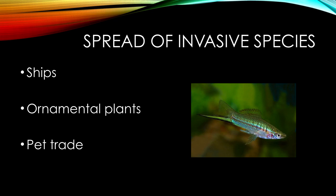Invasive plant species are often brought over for ornamental or gardening purposes. While they are not actively introduced to the surrounding ecosystems, their seeds can be spread by wind, water, or by various animals. Humans are not able to control these natural factors and often do not even realize their plants are sprouting elsewhere outside of their plots. Additionally, they may also be carriers of disease or fungus that could be deadly to native species, such as the American chestnut blight, which we briefly discussed earlier.